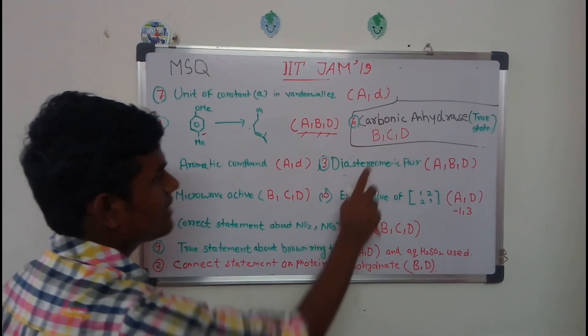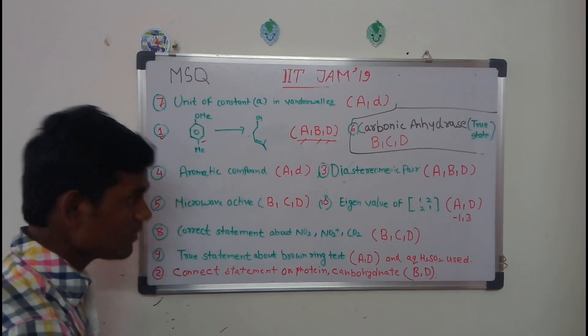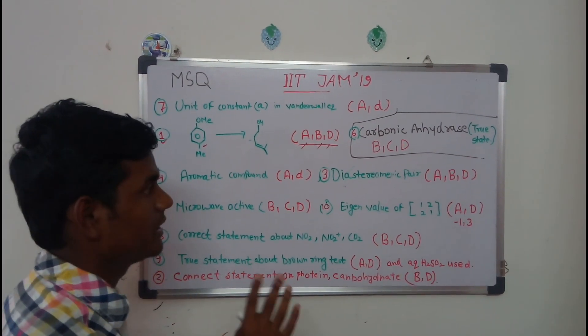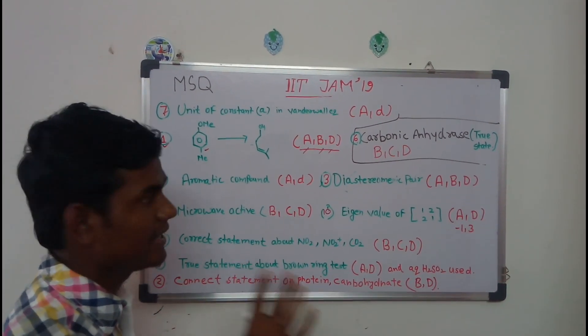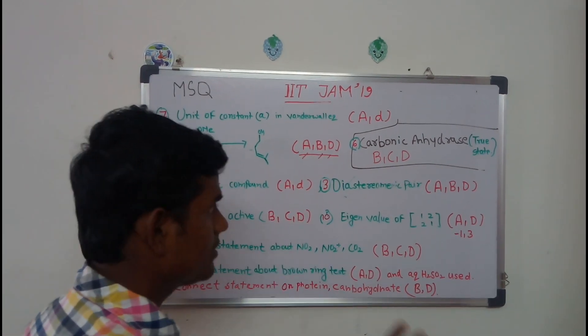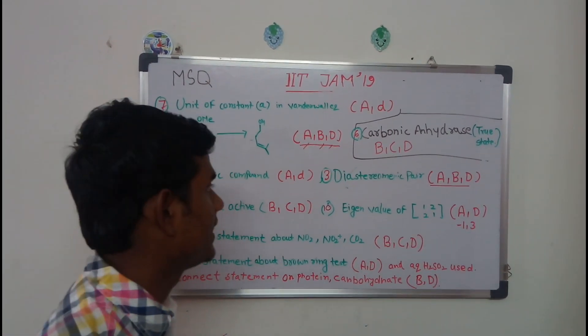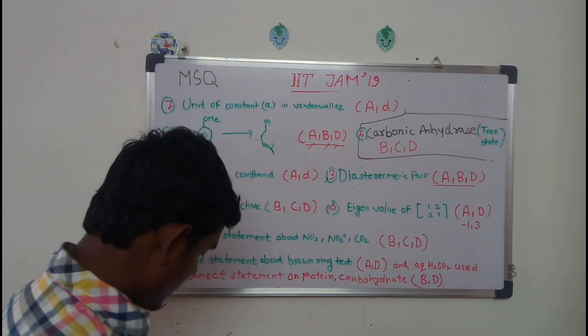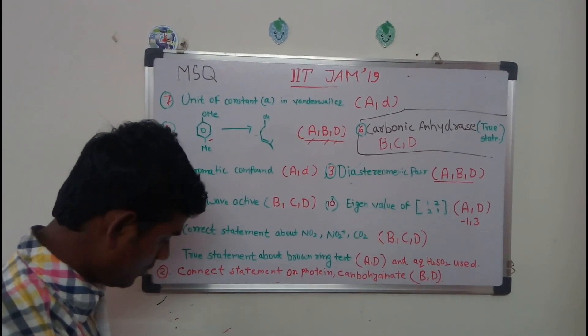There are three options which are diastomeric, and only option C is enantiomer. So without C, the other options - that is A, B, D - are the correct answer. Again, the next question which I'm going to discuss, they have asked about microwave active molecules.